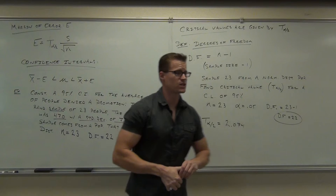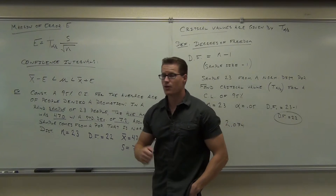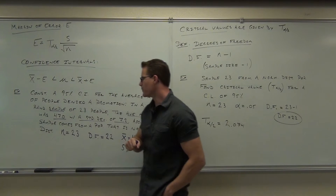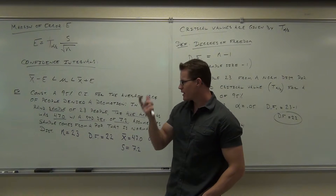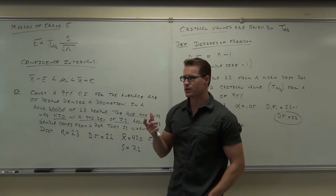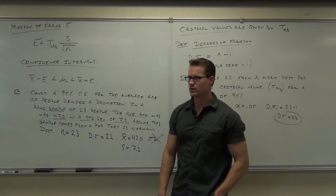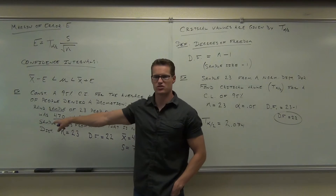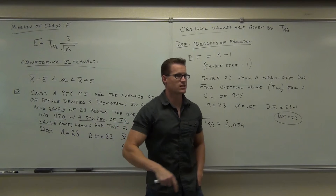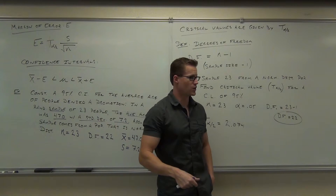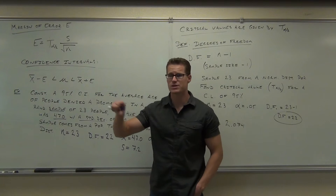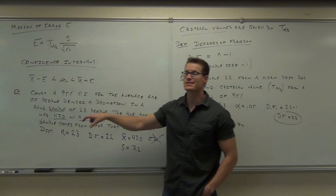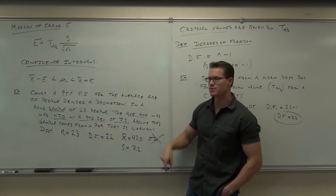Can we even use a T-score? Are the requirements met? First, do I have a random sample? Yes. Second, is my sample size greater than 30? No. So can I use it? Yes — because it comes from a population that's normally distributed. Lastly, is sigma known or unknown? If sigma were known, I'd use a Z distribution for a critical value. Is my sigma known? No — my S is known. That means I'm using a T.